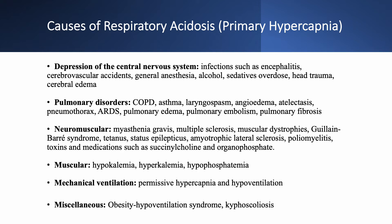There are also muscular causes: severe hypokalemia, severe hyperkalemia, and severe hypophosphatemia. Mechanical ventilation can cause respiratory acidosis due to hypoventilation or intentionally via permissive hypercapnia. Miscellaneous causes include obesity hypoventilation syndrome and severe kyphoscoliosis.